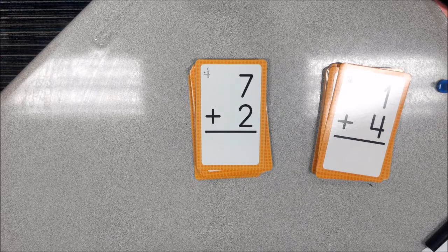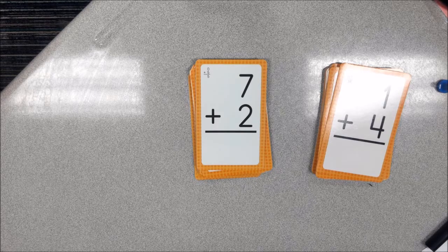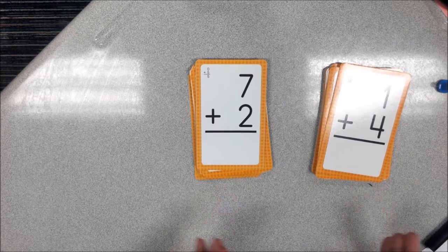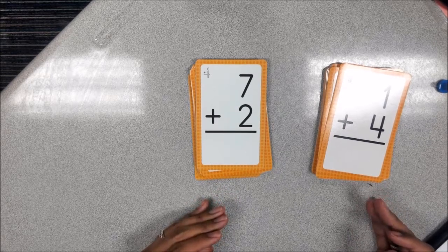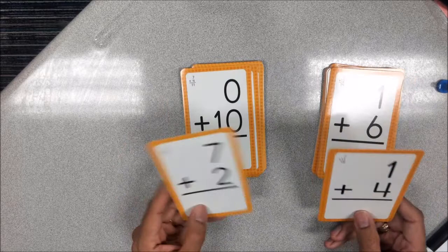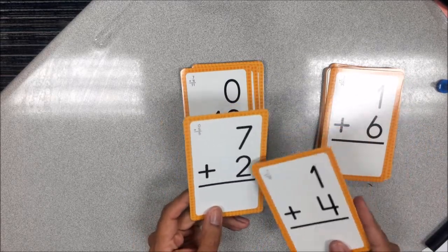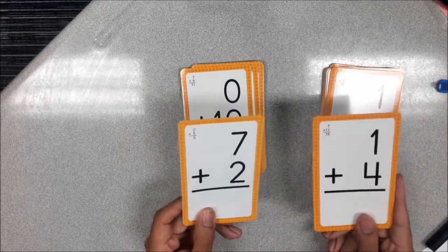For this game, you will divide the deck of cards between two players. And each player will grab the card at the top at the same time and answer the question. So 7 plus 2 is 9. 4 plus 1 is 5.